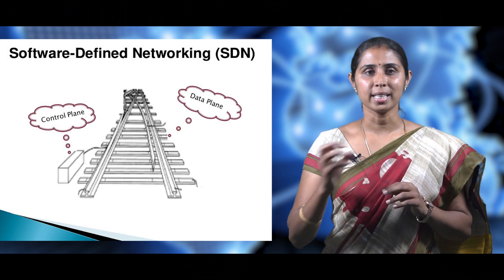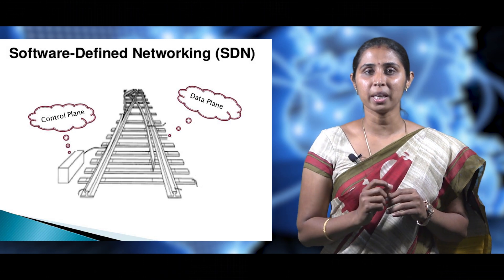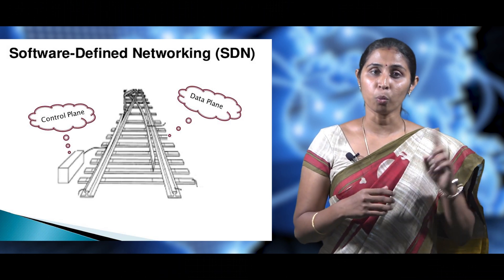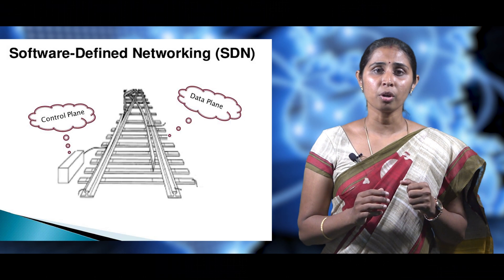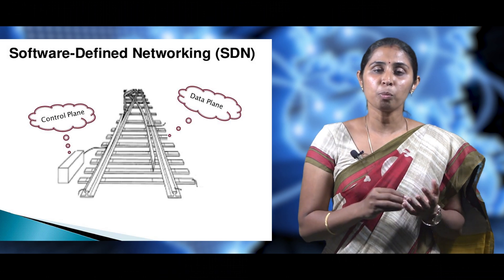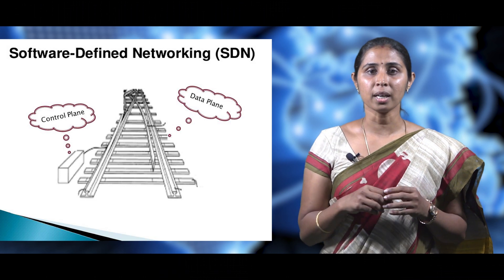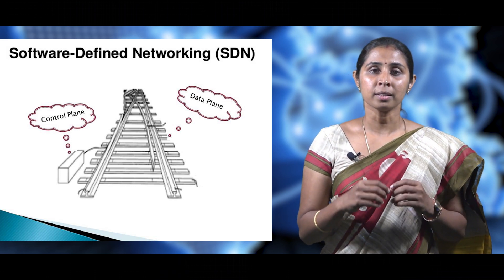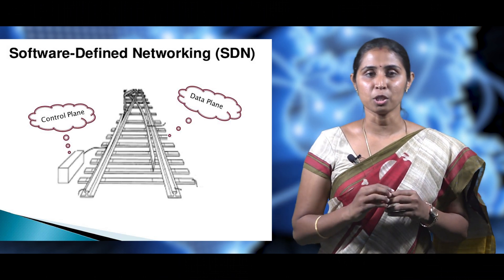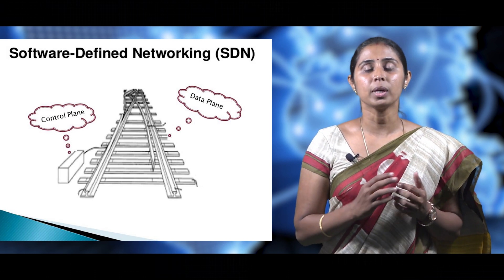Now we will see what the control plane and data plane are. I have used a picture to help you understand their functions — it contains a track controller and railway tracks. The track controller actually controls and decides the track on which the train should move. Similarly, the control plane decides which path the packet should travel. The train moves on the railway track decided by the track controller — the railway track works like the data plane. The data plane forwards the packet on the path decided by the control plane.